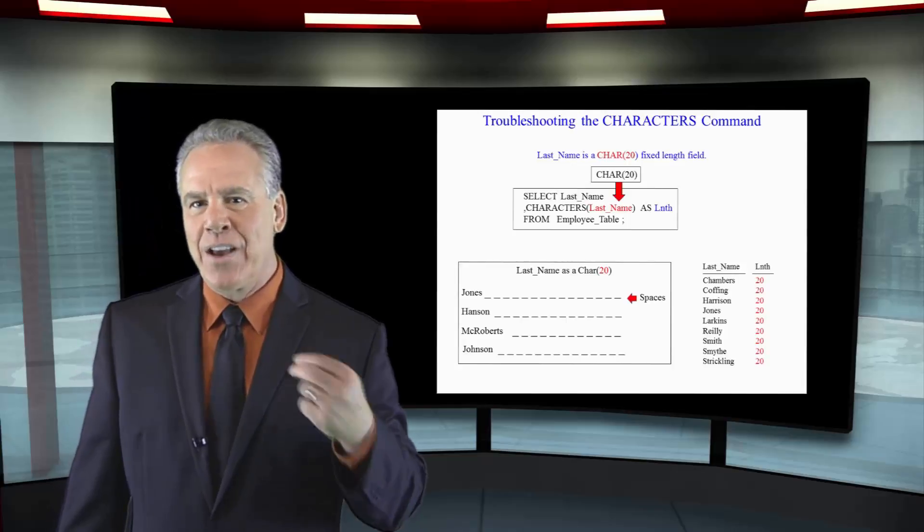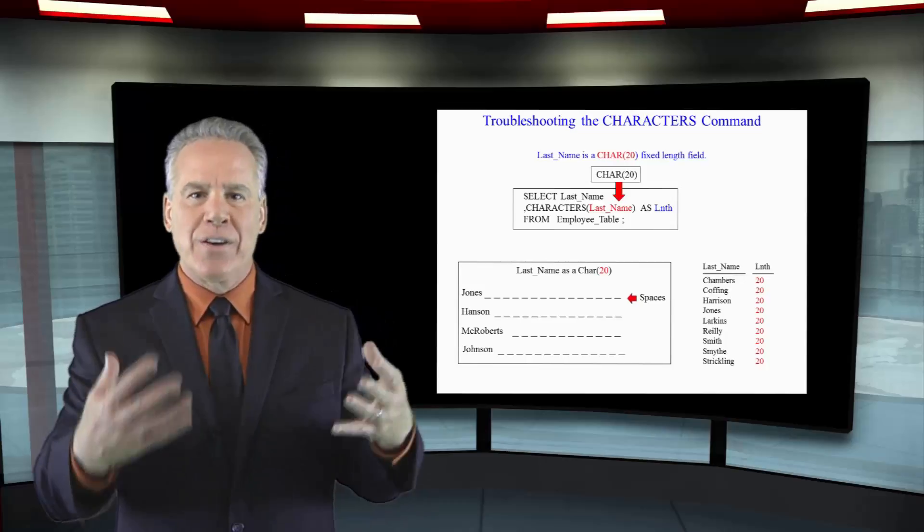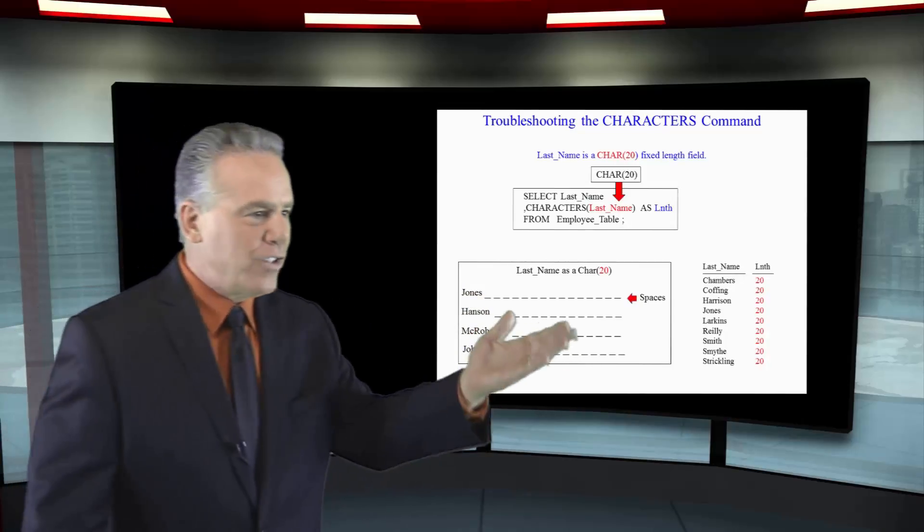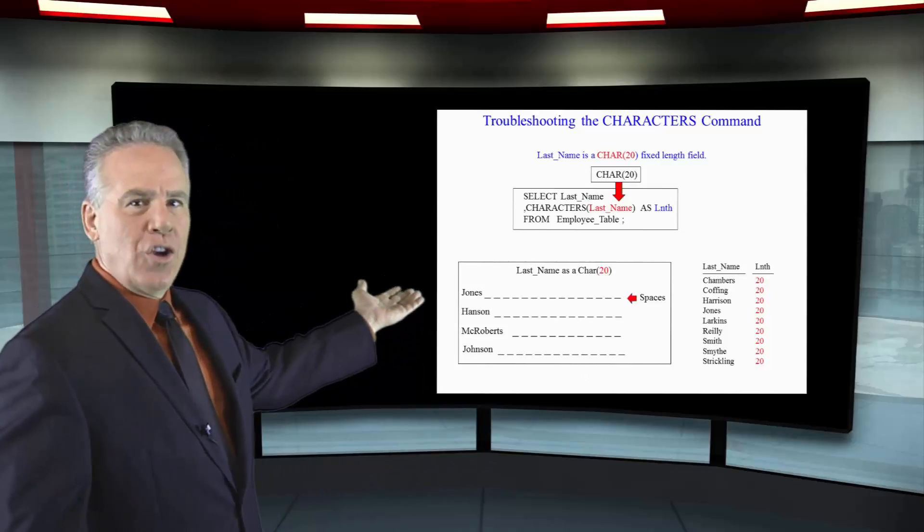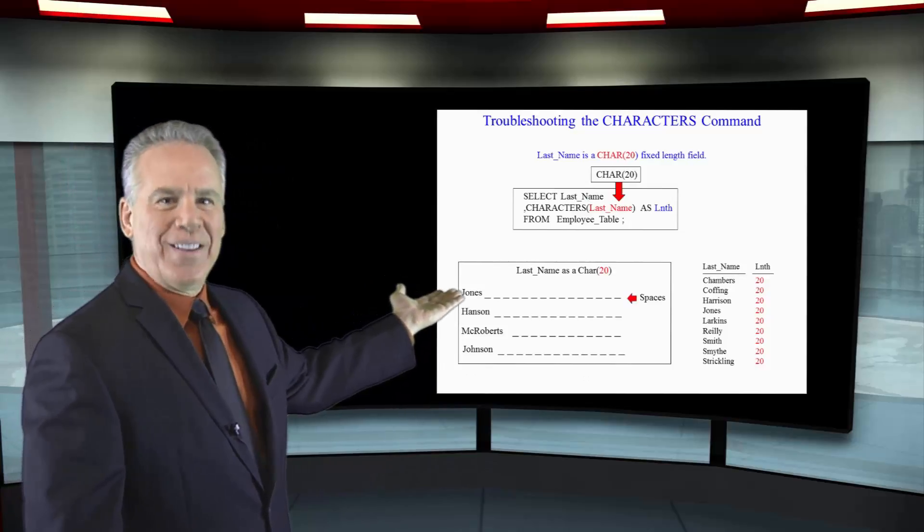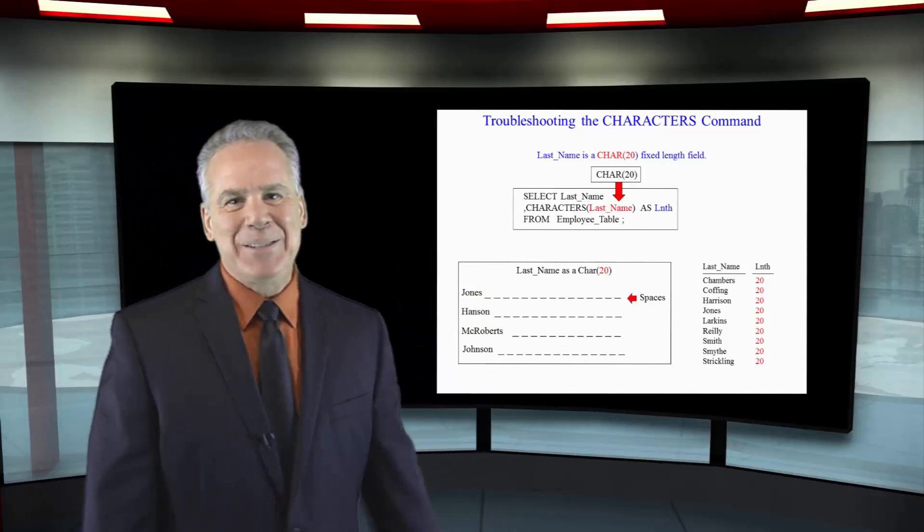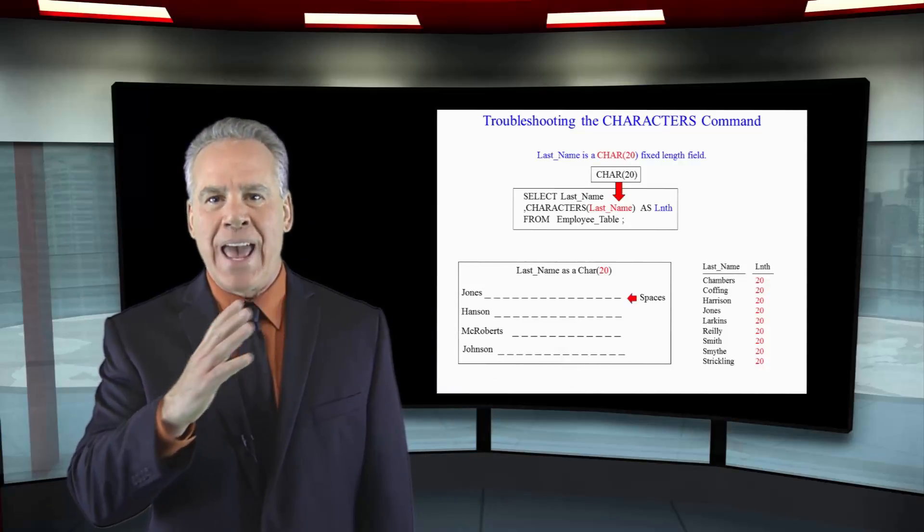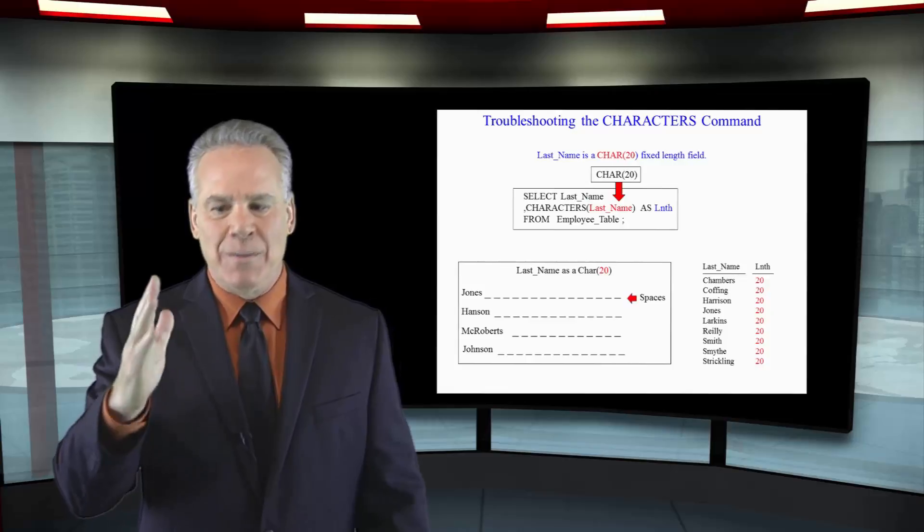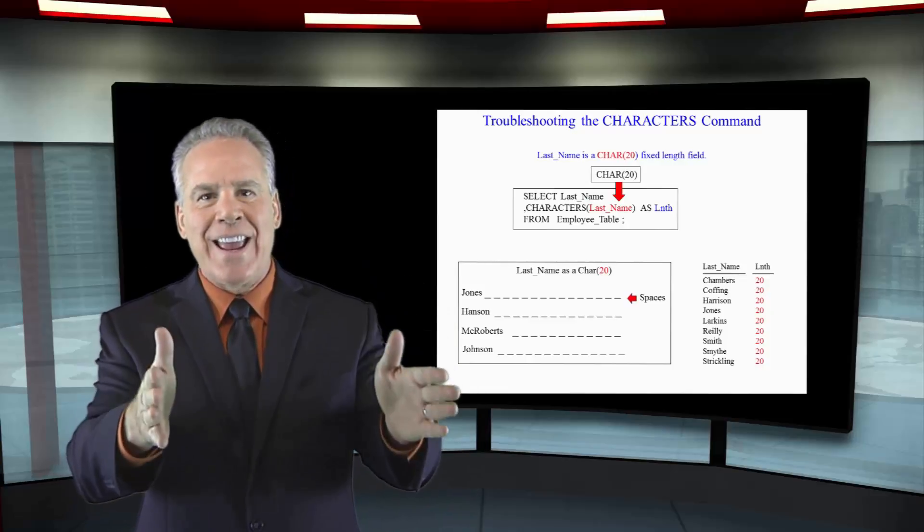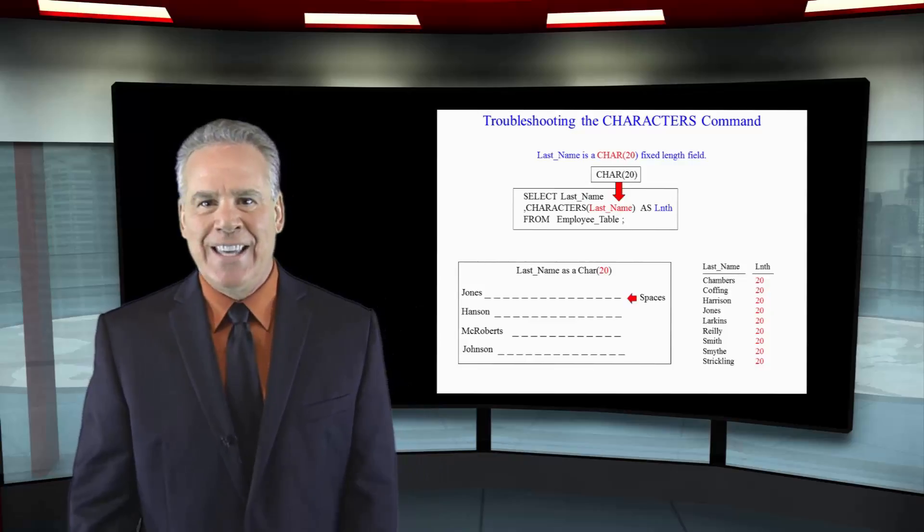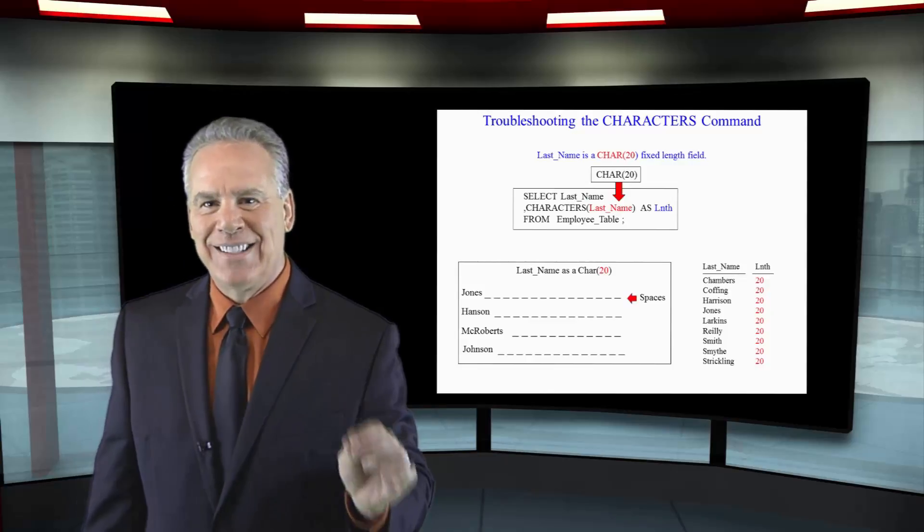We just saw that counting the characters for a character field is going to bring back 20 if it's 20 characters long. As you can see here, here's why. Jones is a CHAR(20) field, and it's got 15 spaces behind it. You see, character data always pads the spaces to make sure that everything is the same length long. But, like Dad used to tell you, get a haircut. And we're going to see that next.